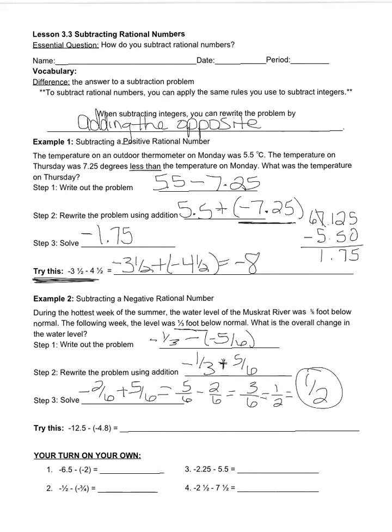Alright, let's do this one together. I'm going to rewrite the problem using addition. Negative 12.5, my subtraction here becomes addition. And then I'm going to take the opposite of this negative 4.8, which is a positive 4.8. My new problem is negative 12.5 plus 4.8. When I look here, I can see that I have more negatives than I do positives. I know my answer is negative.